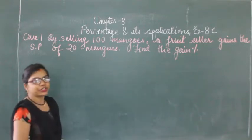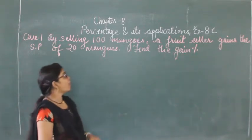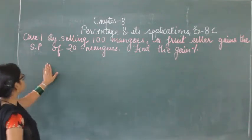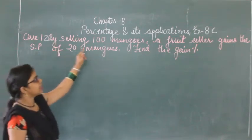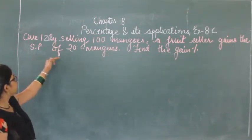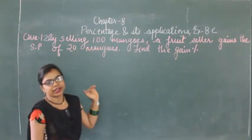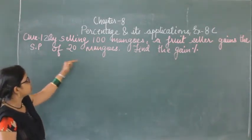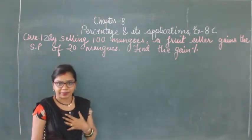Good morning. We are going to solve exercise questions on profit and loss. This is question number 12. By selling 100 mangoes, a fruit seller gains the selling price of 20 mangoes. We have to find the gain percent.